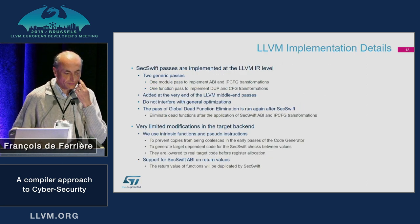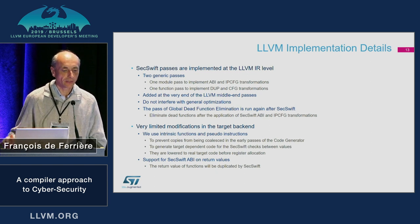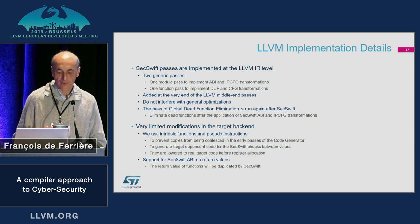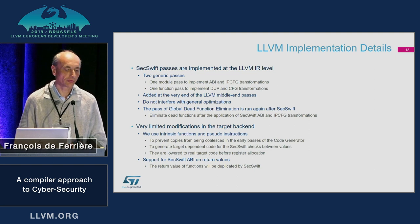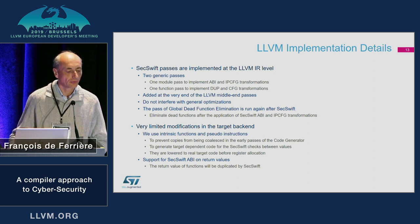The IP GSR and IP RTS values are passed as two additional parameters. SecSwift has been implemented at the LLVM IR level in two generic passes — module passes for the inter-procedural CFG transformation, and function passes for the duplication and control flow graph integrity checking within basic blocks. These two passes are added at the very end of the middle-end pass sequence so that previous optimizations are not affected by our transformations.